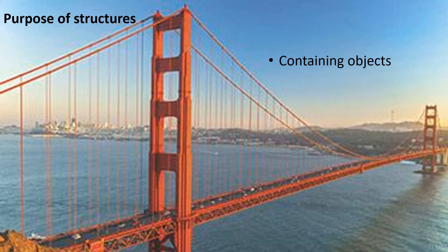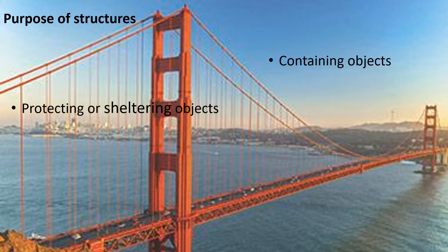A structure can contain or hold objects. For example, a soda can contains the liquid inside. A structure can also be used to protect and shelter objects. For example, a tortoise shell protects its body.